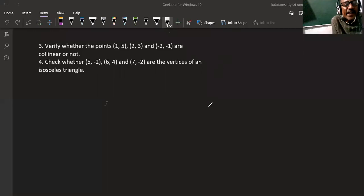Once again, I am reading the question. Check whether (5, -2), (6, 4), and (7, -2) are the vertices of an isosceles triangle. Vertices of isosceles triangle. Simple, you can use this very simple idea.